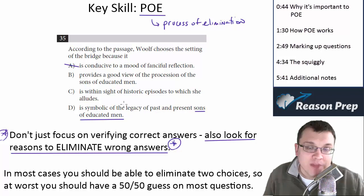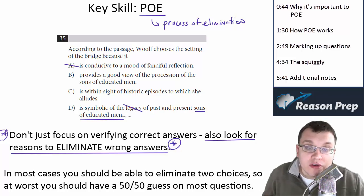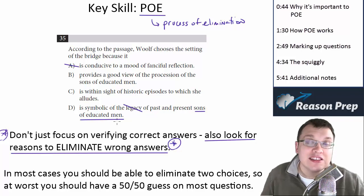And you might look at this and say, hmm, you know what? They didn't really talk about the legacy of the past and present sons of educated men. So what you can do is just kind of put an X or cross out in the choice and say, okay, this is probably enough for me then to get rid of choice D.